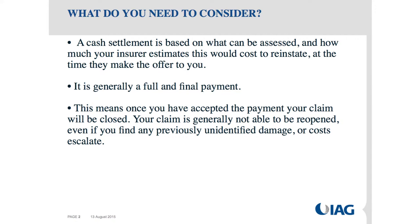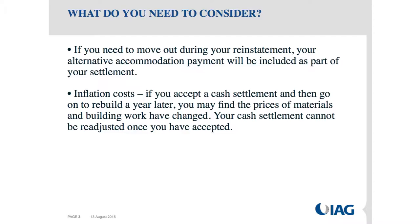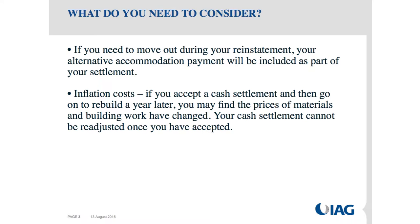If you do take a full and final payment, that means once the payment has been accepted your claim is closed and generally it's not able to be reopened, even if you find previously unidentified damage or costs escalate. That's why you want to be confident around the scope of damage and the costs. If you need to move out during reinstatement and haven't already used your alternative accommodation payment, that will generally be included in your settlement. For most IAG policies that's $20,000 or a percentage of contents. Regarding inflation: if your assessment was done a year ago and you're cash settling now, inflation would be included in most cases. But if you settle today and don't build for another year, forward inflation is not included.